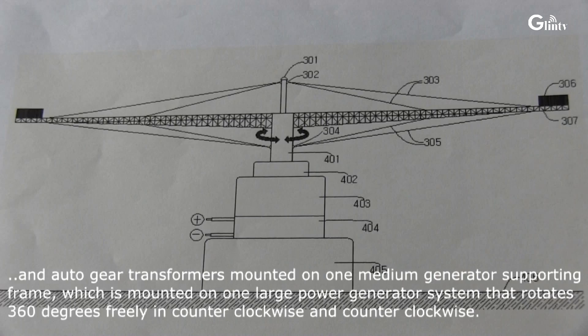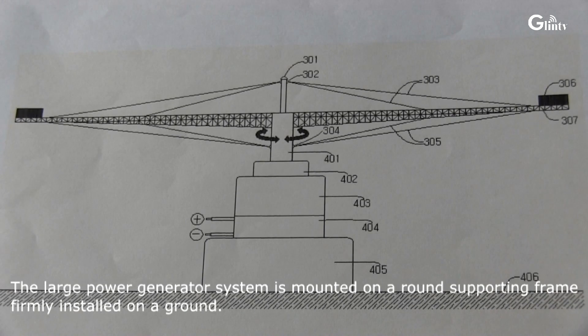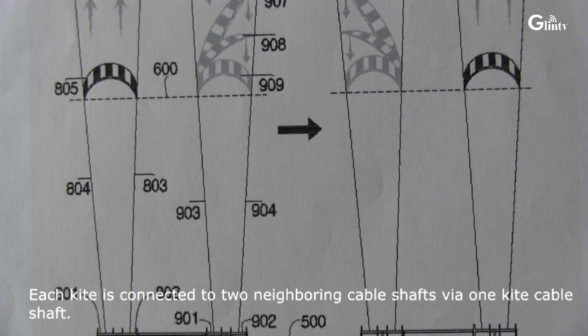The electricity generator uses negligible energy to wind the kite compared to all other prior art that uses kites for power generation.